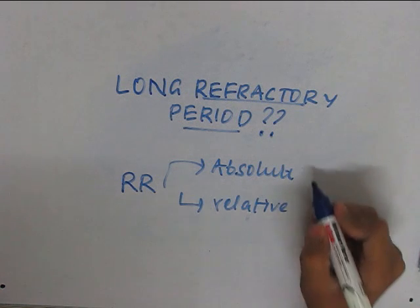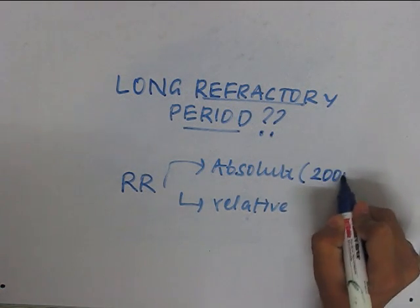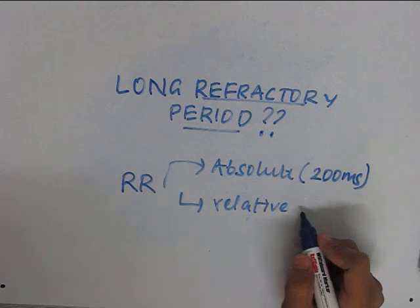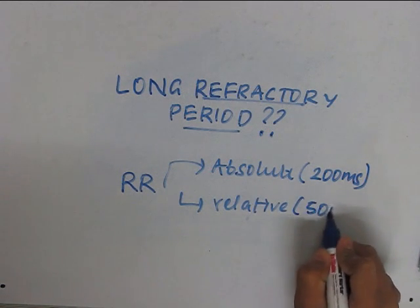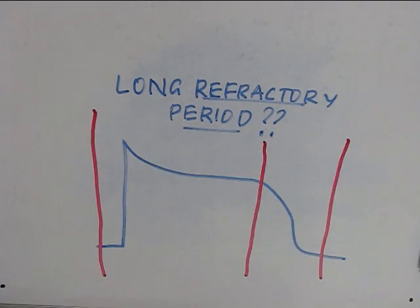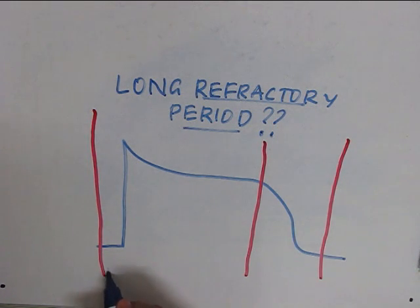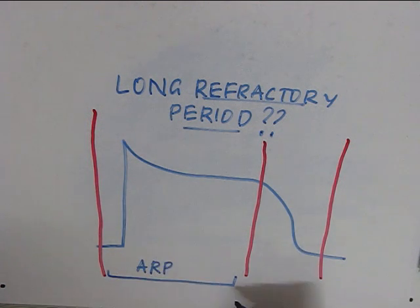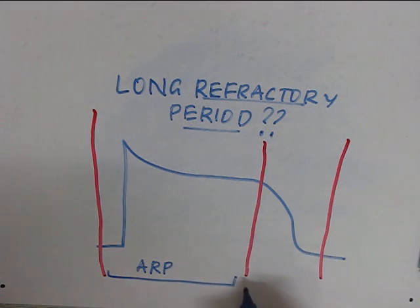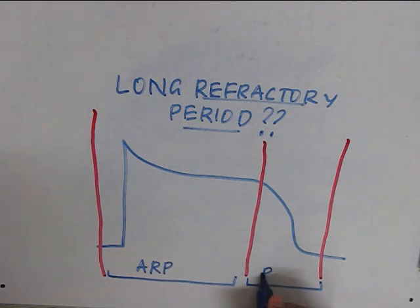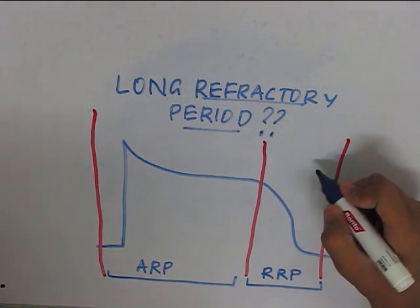The absolute refractory period lasts for about 200 milliseconds, and the relative refractory period lasts for about 50 milliseconds. If this is the normal action potential of the heart, this phase is known as the absolute refractory period, in which a stimulus of any strength would fail to evoke an action potential. This period is known as the relative refractory period, in which a stronger stimulus may evoke an action potential.